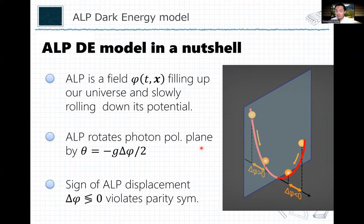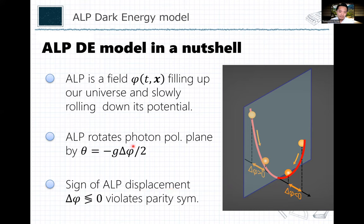If we assume some kind of particular interaction between a photon and this scalar field, we can calculate that the rotation angle of the polarization plane is given by a coupling constant times the excursion of the field. It's a very simple expression. How this field violates parity symmetry is pretty easy to understand.